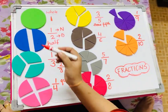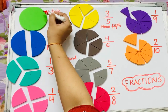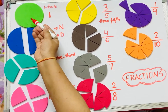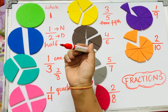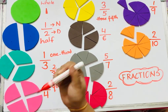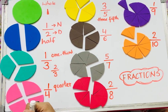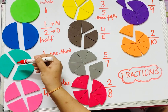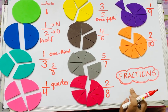It's easy to count a whole thing. For example, a whole pizza. But if we have to find a part of it, how will we count it then? We will do it with the help of fractions.